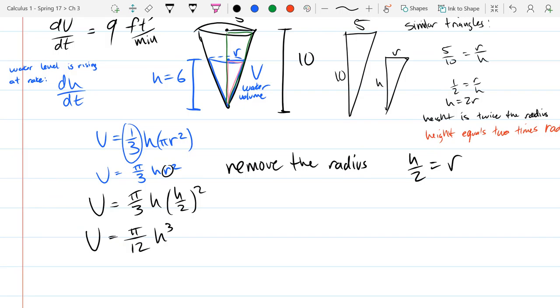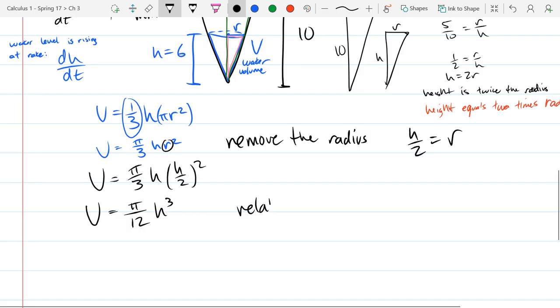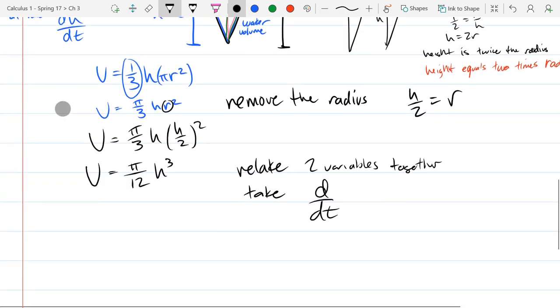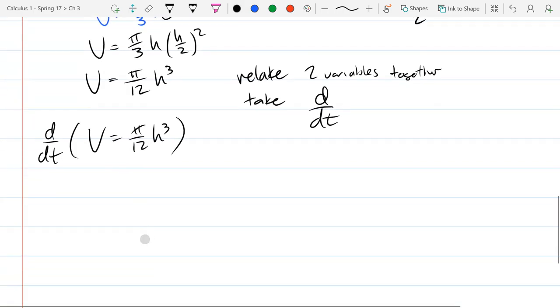So this little geometry trick is basically the tricky part to this problem, aside from writing your original volume formula. Now, we have V and h related. All we're going to do is take derivative and plug in our values. So I know one rate of change and I'm going to use it to find the other rate of change. So now we're ready to actually do calculus.